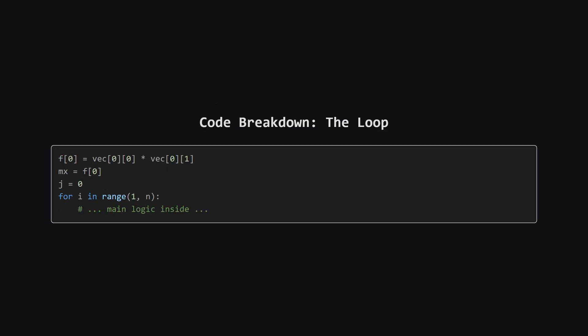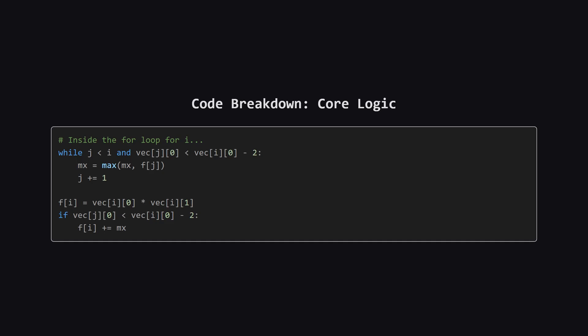Next, we handle the base case. The max damage for just the very first type of spell is simply its damage times its count. We initialize a variable mx to keep track of the best damage from a far-away spell, and a pointer j to help us find it. Then we start our main loop, iterating through each unique spell type starting from the second one. For our current spell type at index i, the while loop moves our pointer j forward to find the last valid spell type — one with damage at least three less than our current one. The mx variable keeps track of the best result in that valid range. Then we calculate the damage if we take the current spell: its damage times its count, plus that mx value we just found.